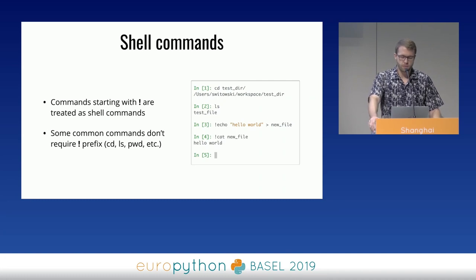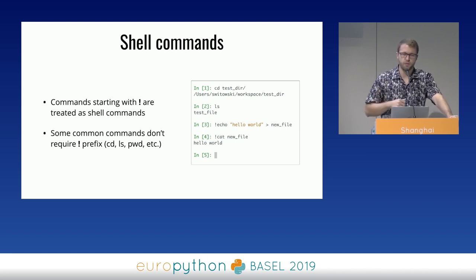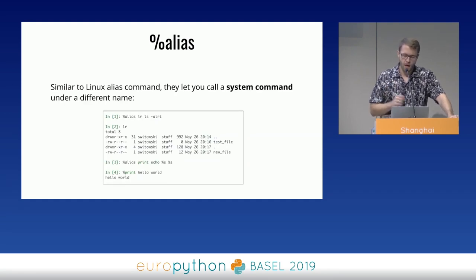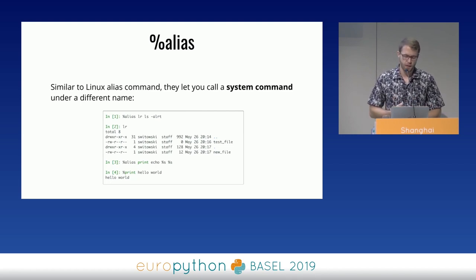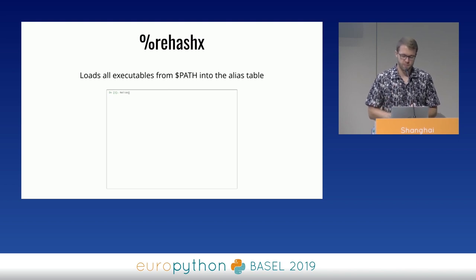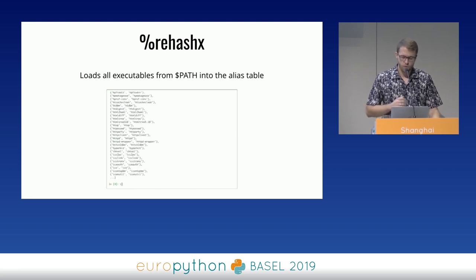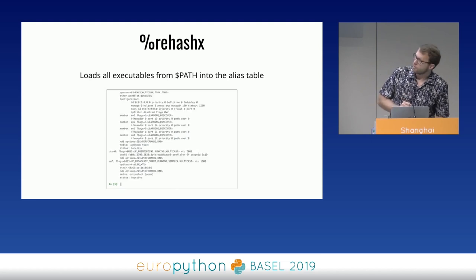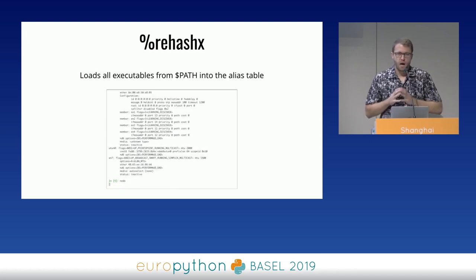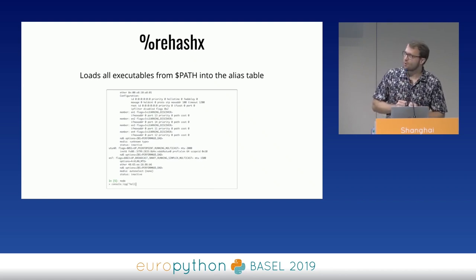You can also run shell commands from IPython. Any command starting with an exclamation mark is treated as a shell command, and some common ones like `cd` or `ls` work even without the exclamation mark. You can create aliases — similar to Linux aliases, they let you call a system command under a different name, and in IPython they can also accept positional parameters. There's also a magic function called `rehashx` that loads all executables from the PATH variable into the IPython session, meaning you can call any shell command right from IPython.